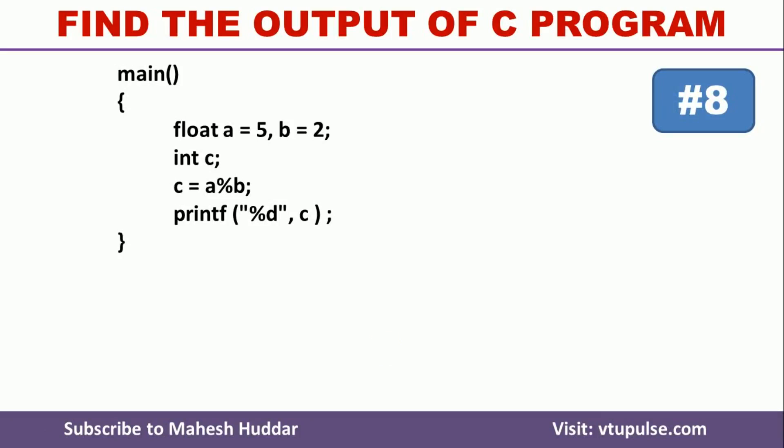Welcome to find the output of C program video series. This is example number 8. In this program, first we have defined two variables a and b of floating point type. The value of a is 5 and the value of b is equivalent to 2.